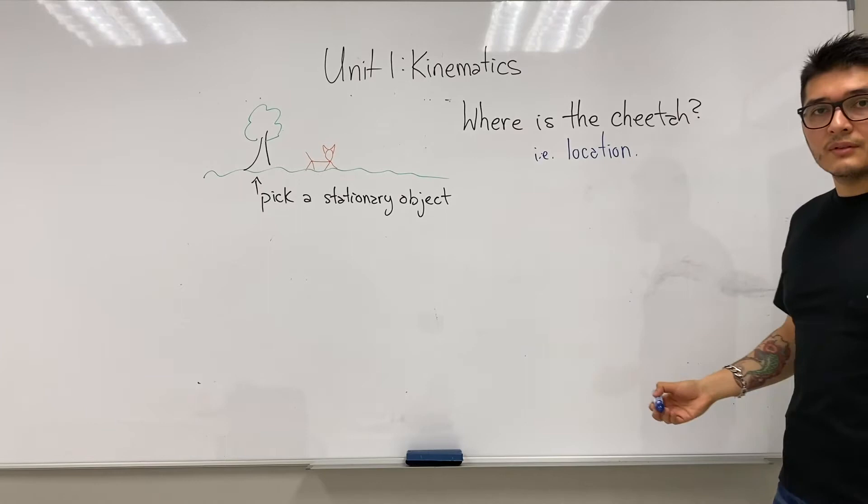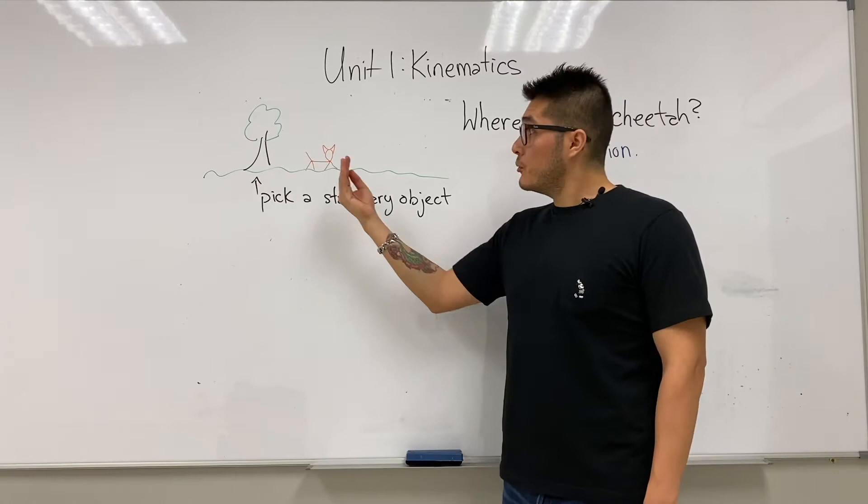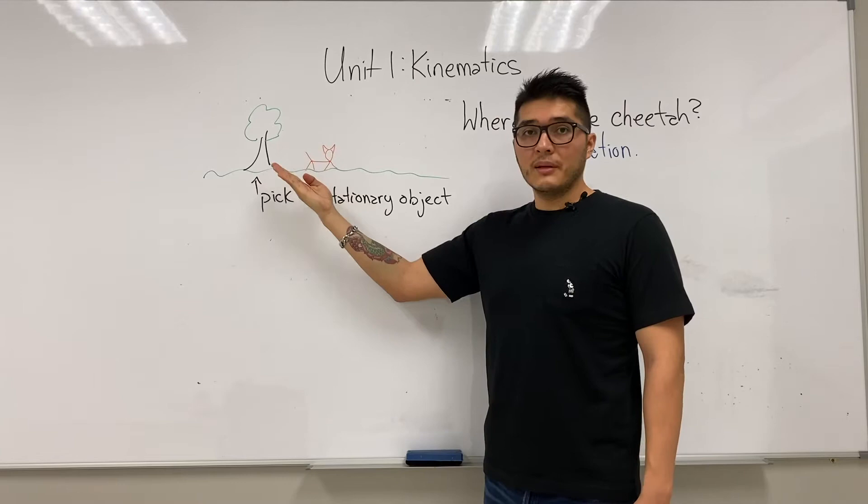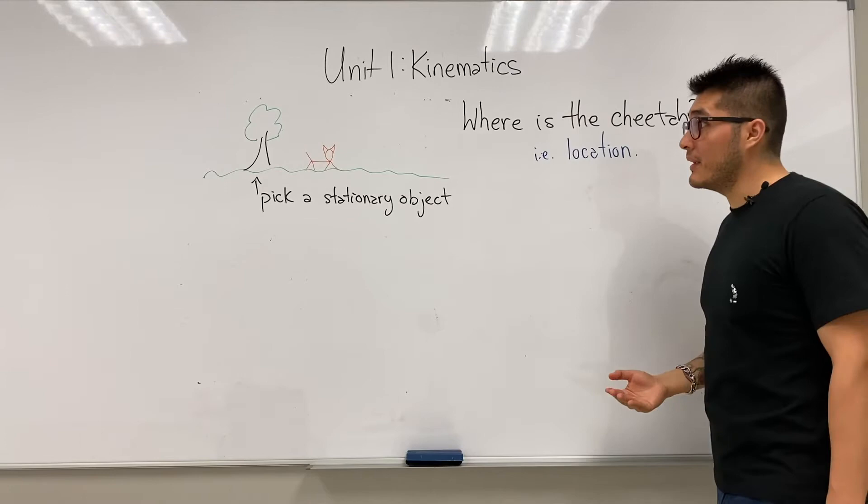To describe the location of something, you need to say where the object is relative to something else. So that something else is our stationary tree. Now you can see the cheetah is to the right of the tree. Okay, we're doing better now, but in physics we have to do even better than this.